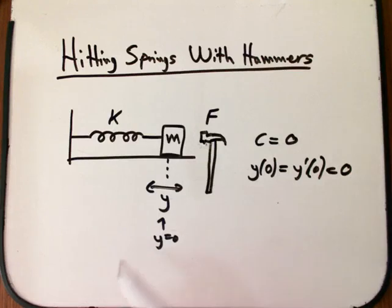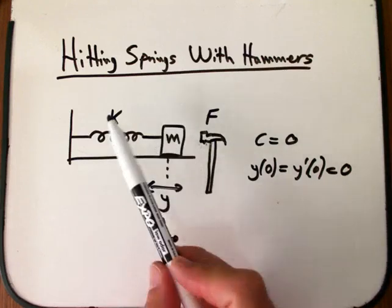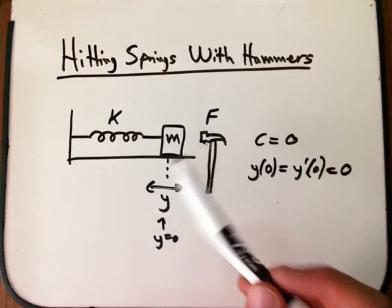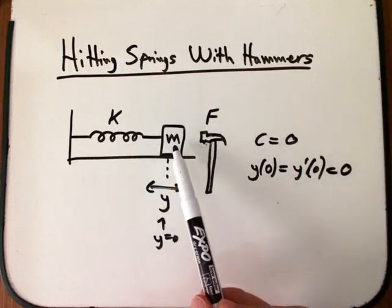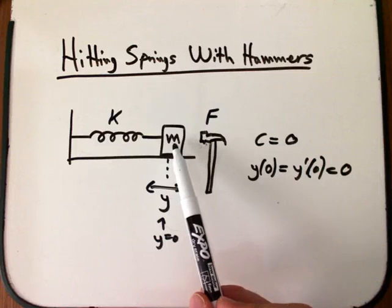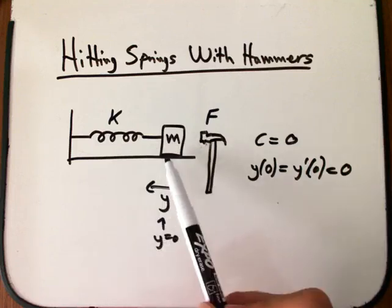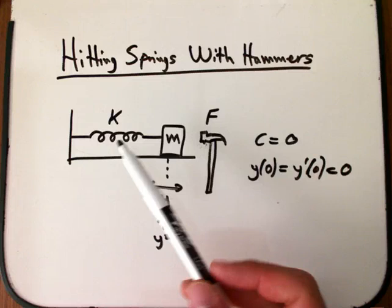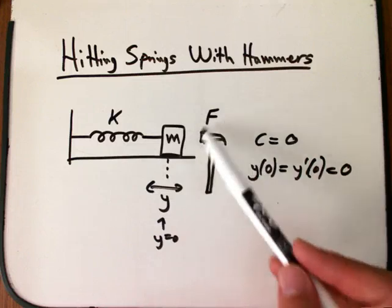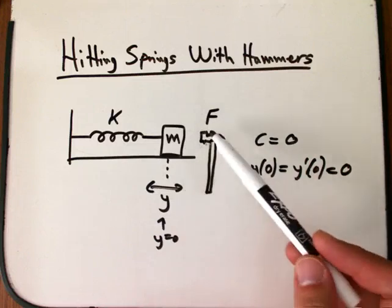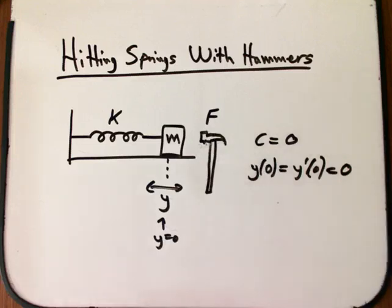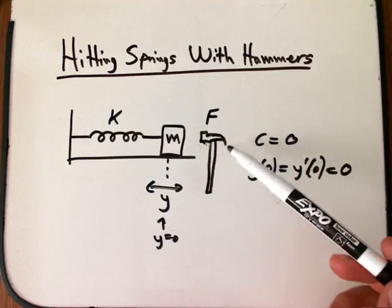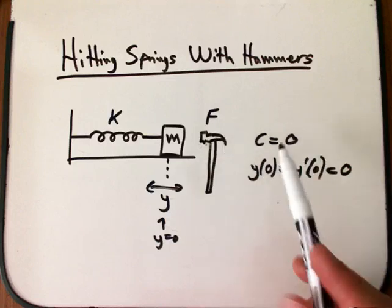I might show the PDF occasionally, but I'm going to do it mostly on the board here. So we've got a typical mass-spring system, mass m, spring constant k. And y is going to be our variable describing the displacement of the mass from equilibrium. So y equals zero is equilibrium. And then we're going to apply a force to it.